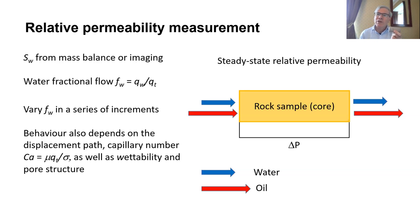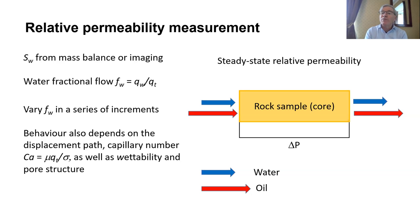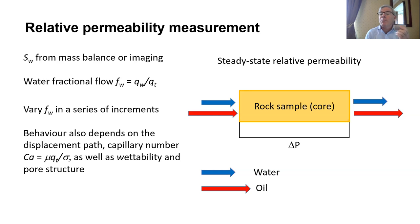What we do is simulate a displacement sequence. In this video, we start with water and oil initially present — like the initial state of an oil reservoir — and then we increase the relative amount of water being injected, increasing the water fractional flow in a series of increments. We know the fractional flow because that's what's imposed by the pumps. We measure the pressure difference across the phases, and it's quite simple mathematics to calculate the relative permeability. The saturations are measured from pore-scale imaging. The relative permeability depends on the displacement path, flow rate, capillary number, but mainly on the interaction between wettability and pore structure.